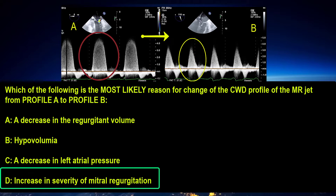The correct answer to this question is that the reason for the change of the profile of mitral regurgitation from panel A to B is an increase in the severity of mitral regurgitation to severe intensity. Now let's go over this explanation in greater detail.